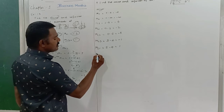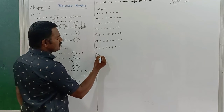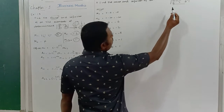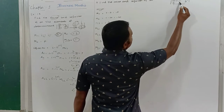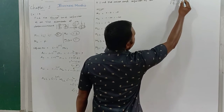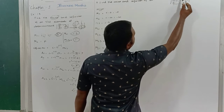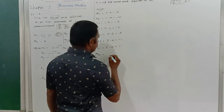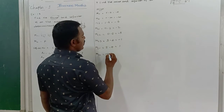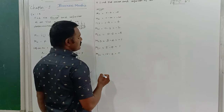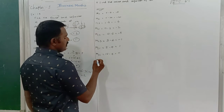Minor M32: third row, second column. I remove that row and column, giving 15 minus 4 = 11. So M32 = 11.